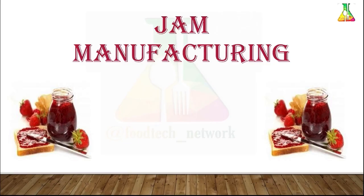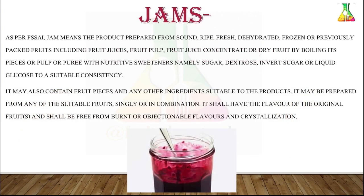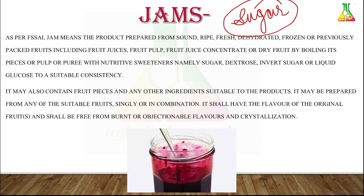Today's lecture will be based on jam manufacturing. We all have seen jams in our homes. Jams are basically a product made by boiling fruit pulp with sufficient sugar. Fruits like apple, pear, peaches, papaya, carrots, strawberry, mango, tomato, grapes, and musk melon are used. Jam can be prepared from one kind of fruit or a combination — mixed fruit jams are also available. Commercial jams such as tutti frutti can be prepared from pieces of fruits.